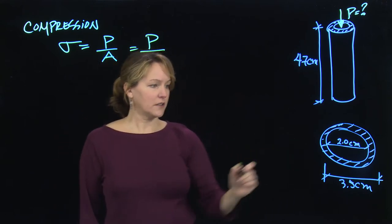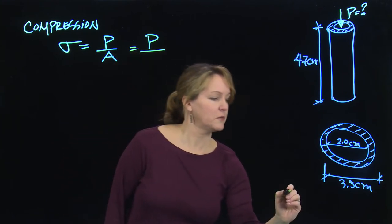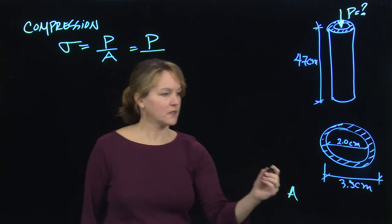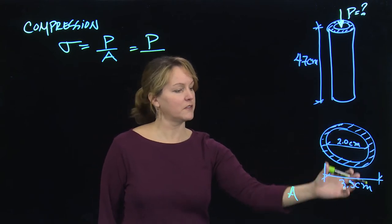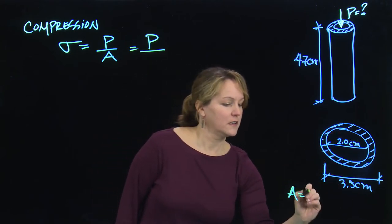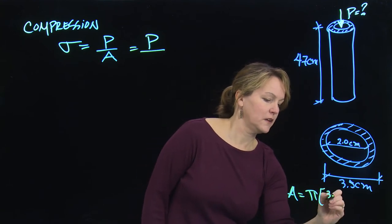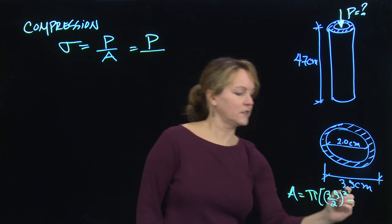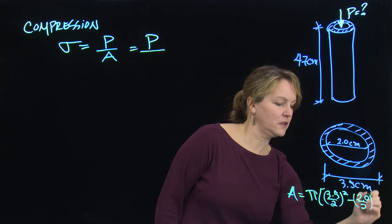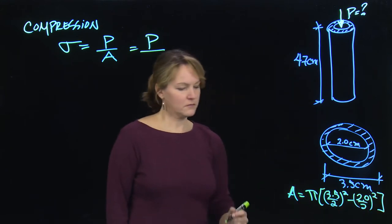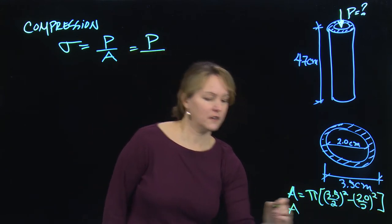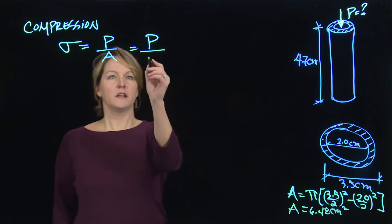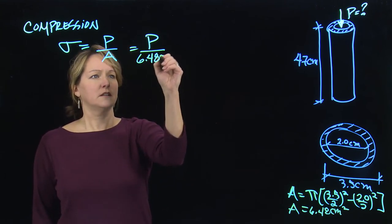But I can go in and calculate the cross-sectional area. So if I'm looking at this cross-section, it's a circular cross-section. So I should be able to calculate the area. And the area of a circle is pi r squared. So the area of this hollow tube will be pi r squared of the outer minus pi r squared of the inner. So I'll have pi times 3.5 over 2 squared, minus this inner circle, which would be 2.0 over 2 squared. And I calculate that cross-sectional area. That cross-sectional area is 6.48 centimeters squared. But I can use that up here. 6.48 centimeters squared.